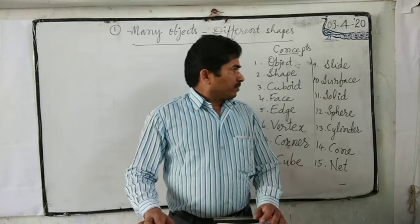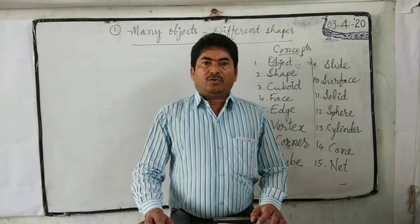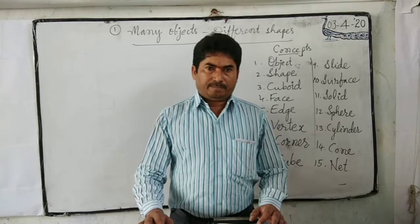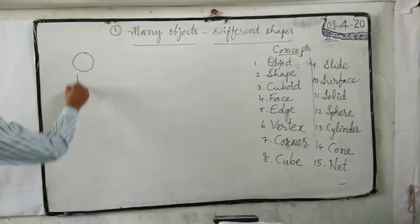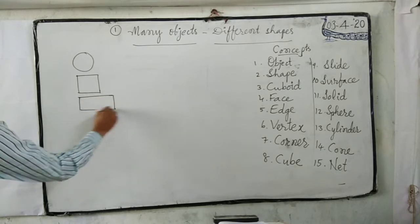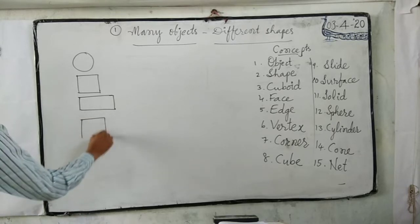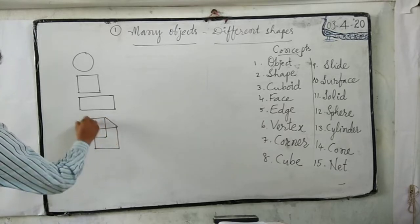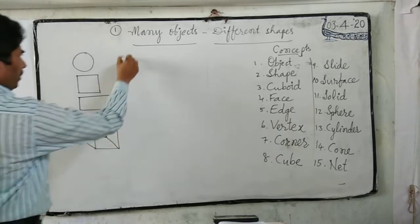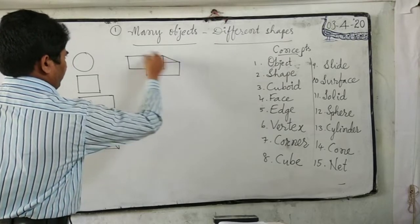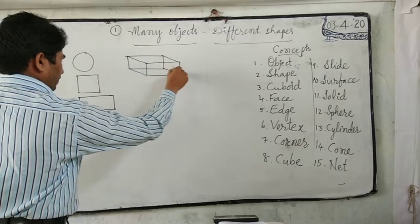Next, shape. What is a shape? The outward form of a figure or object is called a shape. Examples of shapes include: circle, square, rectangle, cube, and so on.